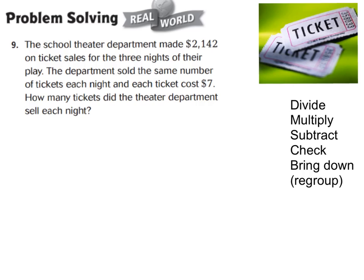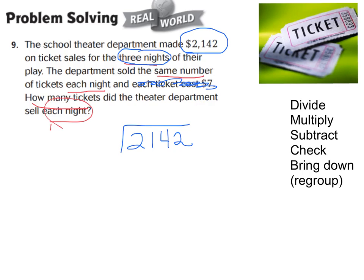Let's come down to our problem-solving question number 9. The school theater department made $2,142 on ticket sales for three nights of their play. They sold the same number of tickets each night and each ticket cost $7. How many tickets did they sell each night? We don't need the $7 — that's there to trick you. We know they made $2,142 over three nights, so we divide $2,142 by 3.